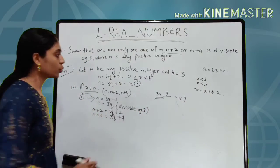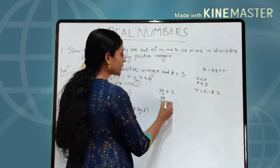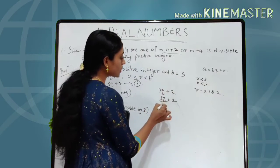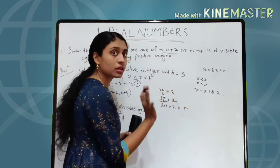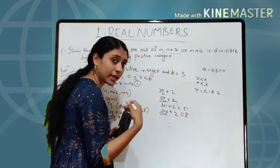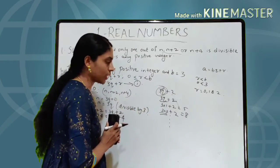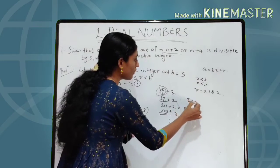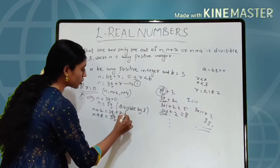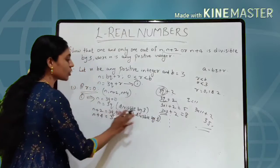But what about 3Q + 2? 3Q is divisible by 3, but when we add 2 to it — for example if Q = 1, then 3×1 + 2 = 5, not divisible by 3. Take 3×2 + 2 = 8, also not divisible. If Q = 11, then 33 + 2 = 35, not divisible by 3. So 3Q + 2 is not divisible by 3 for any value of Q.